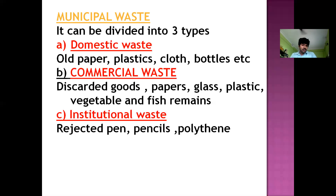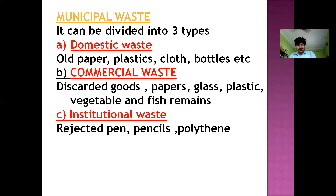So what is commercial waste? It includes paper, broken glass, plastic, and vegetable waste — meaning the thrown away outer cover of vegetables after cutting. Fish remains means after cutting the fish, the gills of the fish are removed — that is the fish remains. So commercial waste includes paper, broken glass, vegetable remains, and fish remains.